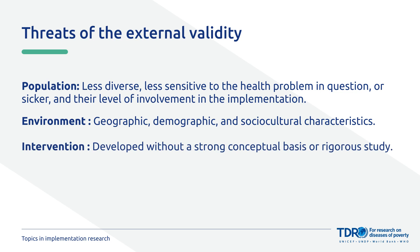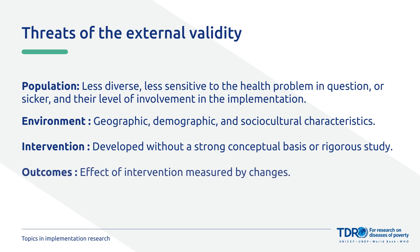Third, intervention or strategy: if the intervention was arrived at without a strong conceptual basis or rigorous study to delineate its core elements and mechanism, it might not work the same way somewhere else. Fourth, outcome: if interventions are linked to single outcomes measured by changes in one parameter, they may be more easily generalized compared to interventions linked to complex outcomes. If it's more complicated, like looking at different aspects of how well the intervention was accepted, it might not be as easy to use the findings in another place.